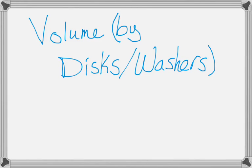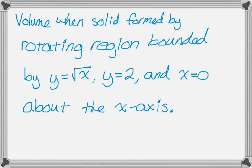In this video we're going to do a volume by discs and washers around a horizontal axis. The first problem we'll solve is to find the volume of the solid formed by rotating the region bounded by y equals radical x, y equals 2, and x equals 0 rotated around the x-axis.